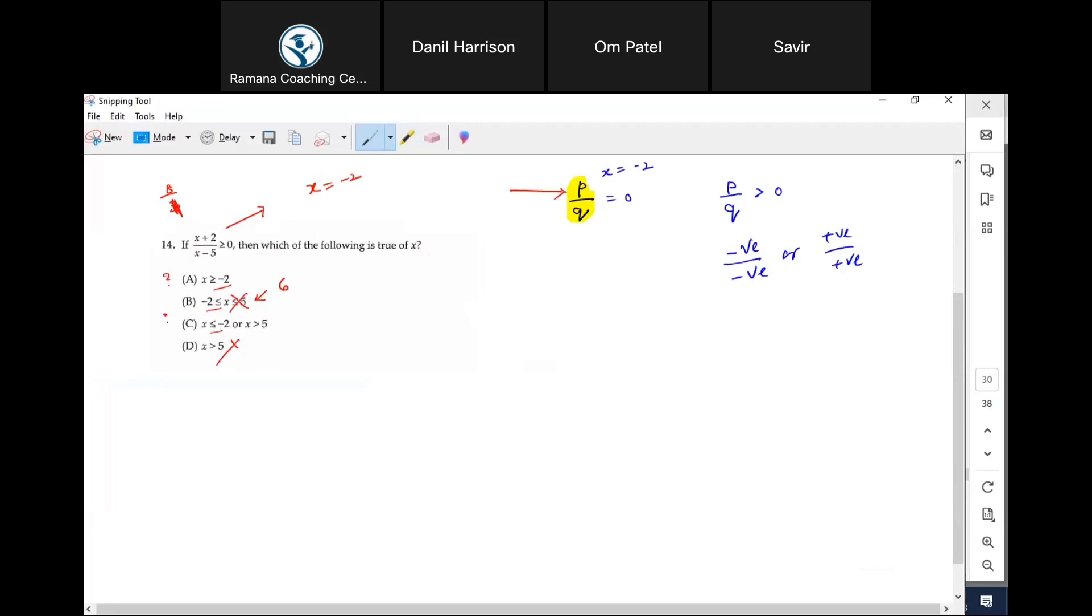Now he's saying x is greater than negative two. Can I pick a value that is greater than negative two? Can I pick negative one? Okay, if I pick negative one, what is negative one plus two? One.